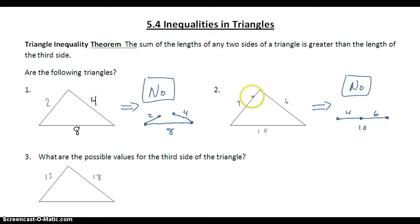In order to have a triangle, the two smallest sides added together have to be greater than the third. If they're less than or equal to, we don't have a triangle.